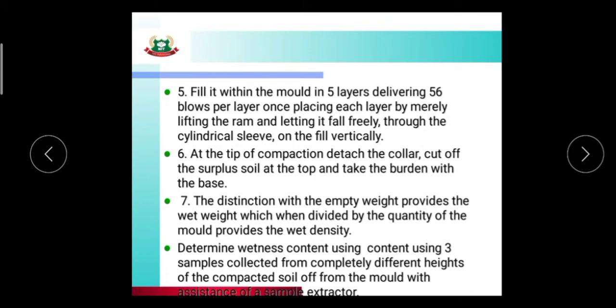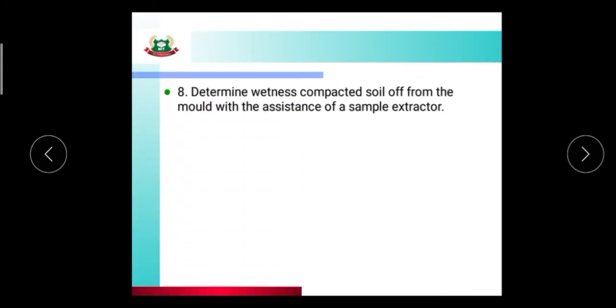Determine wetness content using three samples collected from completely different heights of the compacted soil or from the mold with the assistance of the sample extractor. The dry density is then set from the wet density and water content.